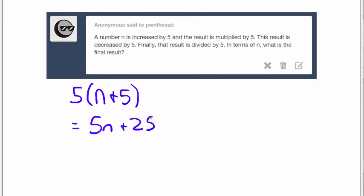And then what happens is this result is decreased by 5. So we're going to subtract 5 from that, and we'll end up with 5n plus 20.